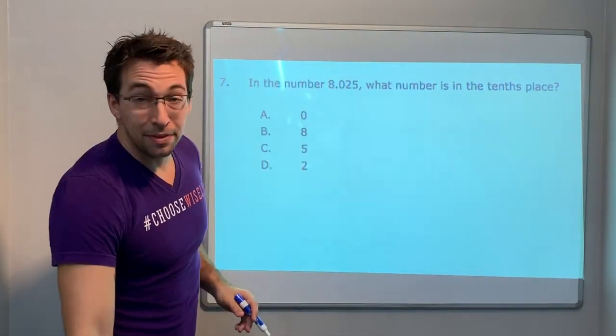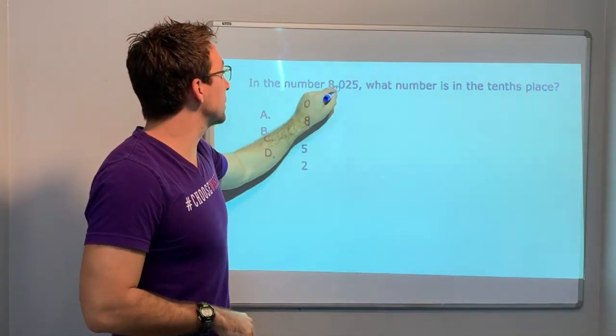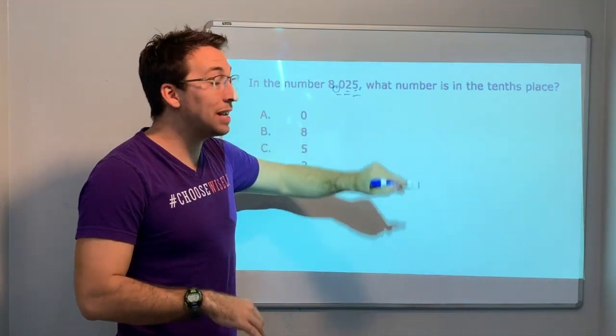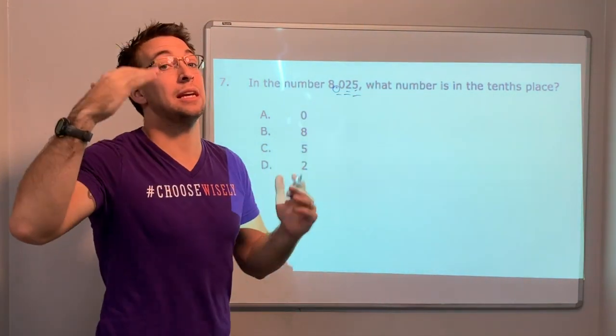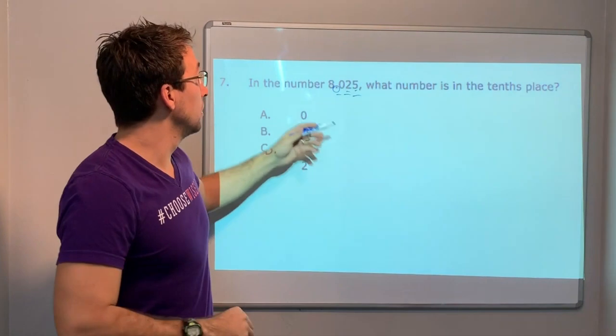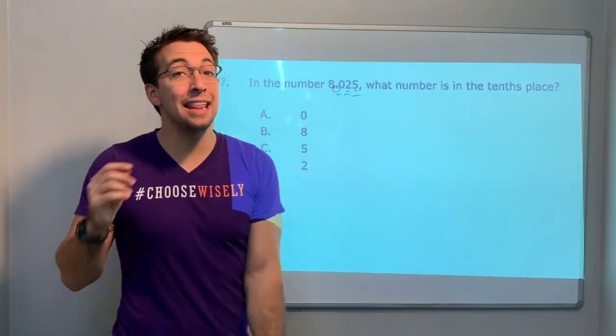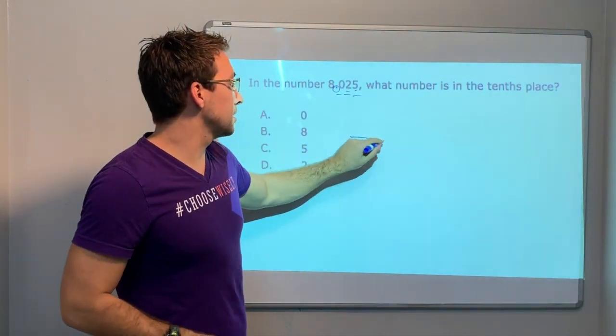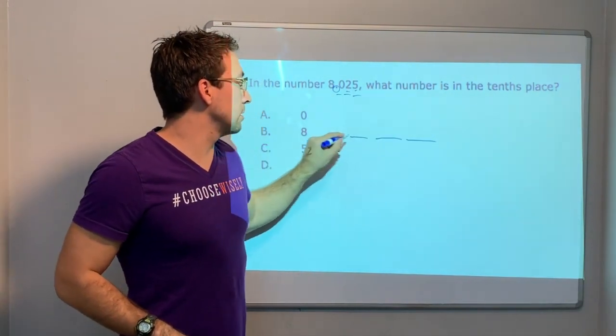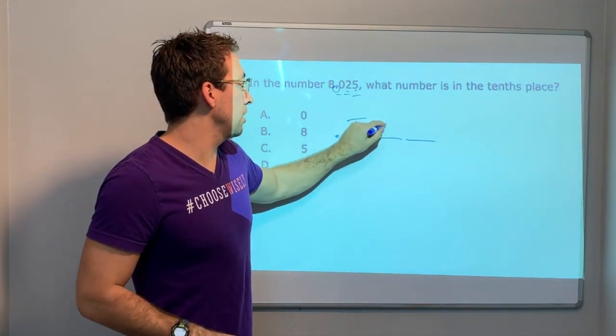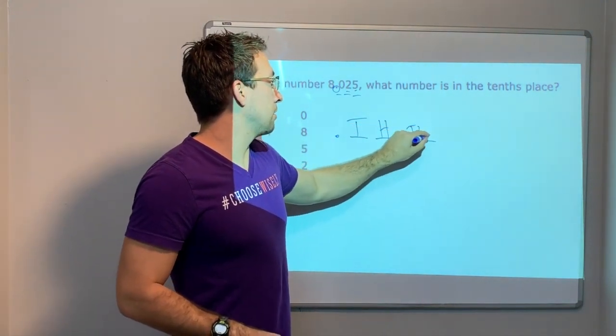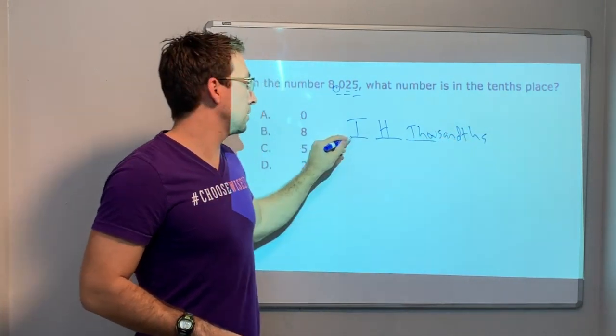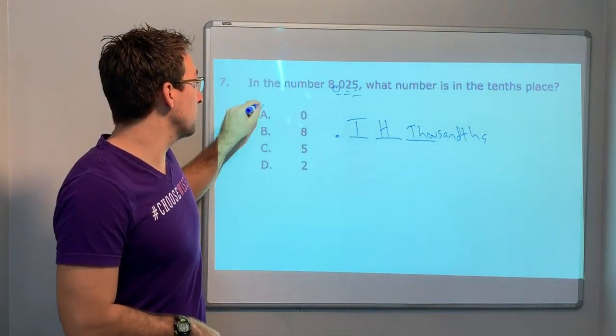And the number 8 and, here's our decimal, 25. So there's one, two, three decimal places. So it's going to end in the thousandths. 8 and 25 thousandths. What is the number in the tenths place? Tenths, hundredths, thousandths. Okay, tenths. So, zero. A.